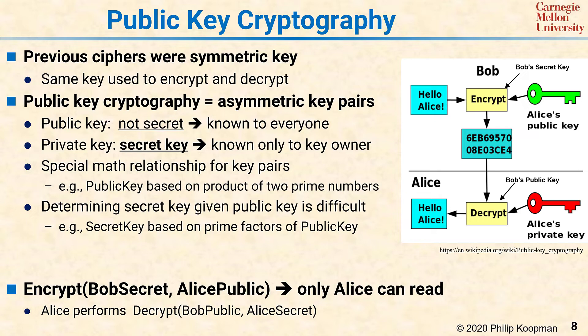Alice does the same thing with different secret primes, and they exchange public keys. Say the message is 'Hello Alice' — Bob encrypts it using his own secret key and Alice's public key. He has a prime factor only he knows, and uses that along with Alice's public key, which is a product of two prime factors only she knows. The encrypted message is sent over a public channel, and Alice then uses Bob's public key and her own private key — a factor of her public key — to decrypt the message.